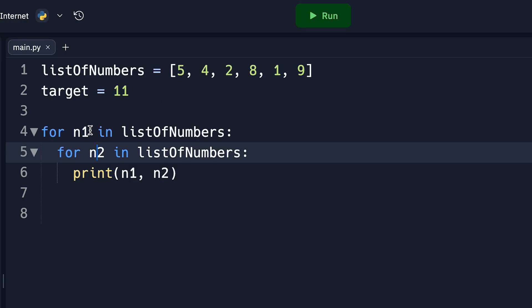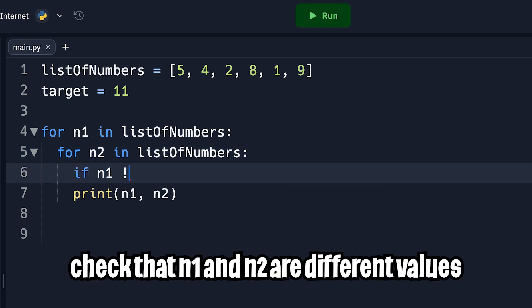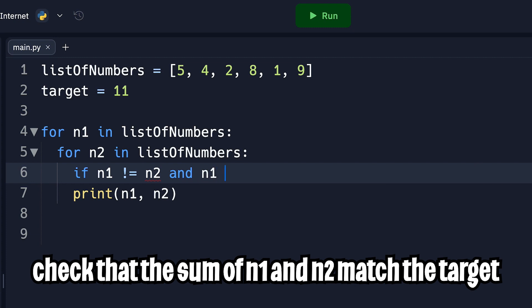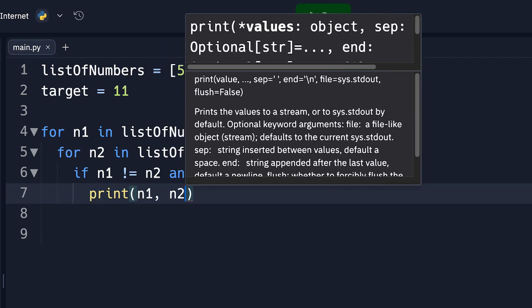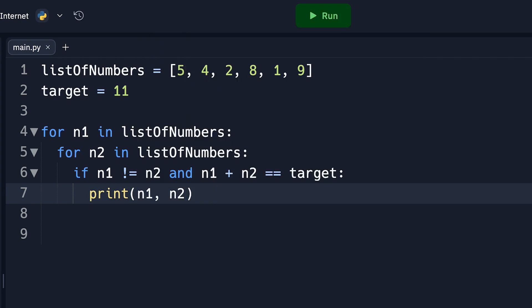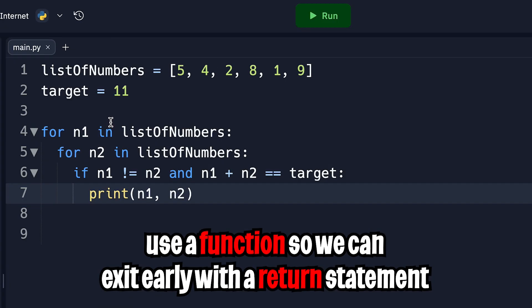So one of the requirements of the problem is that we can only use unique numbers. We can account for this very easily by just doing if N1 does not equal N2. And then we can check if N1 plus N2 equals equals target. And if this is true, we can just print N1 and N2. And now let's click run. And as you can see, we got 2 and 9, which are the values that we're looking for. But we have one problem here where we see two values.